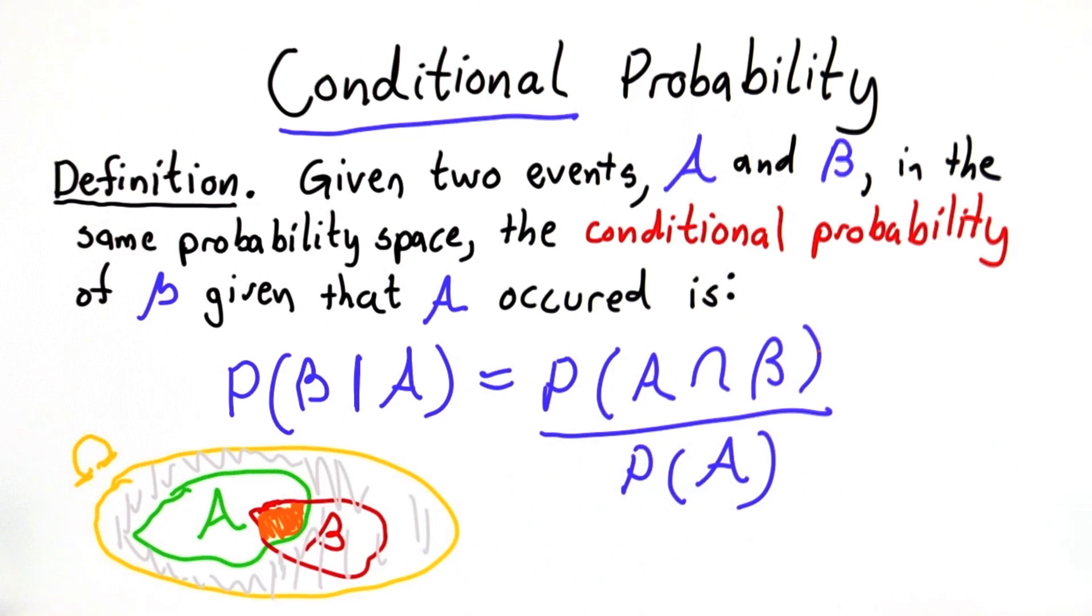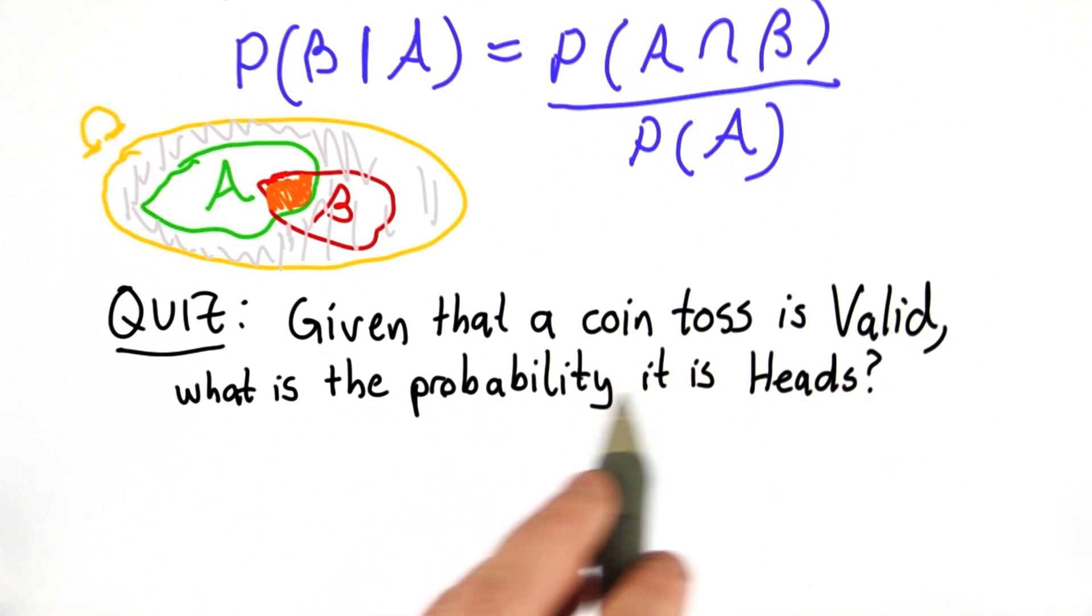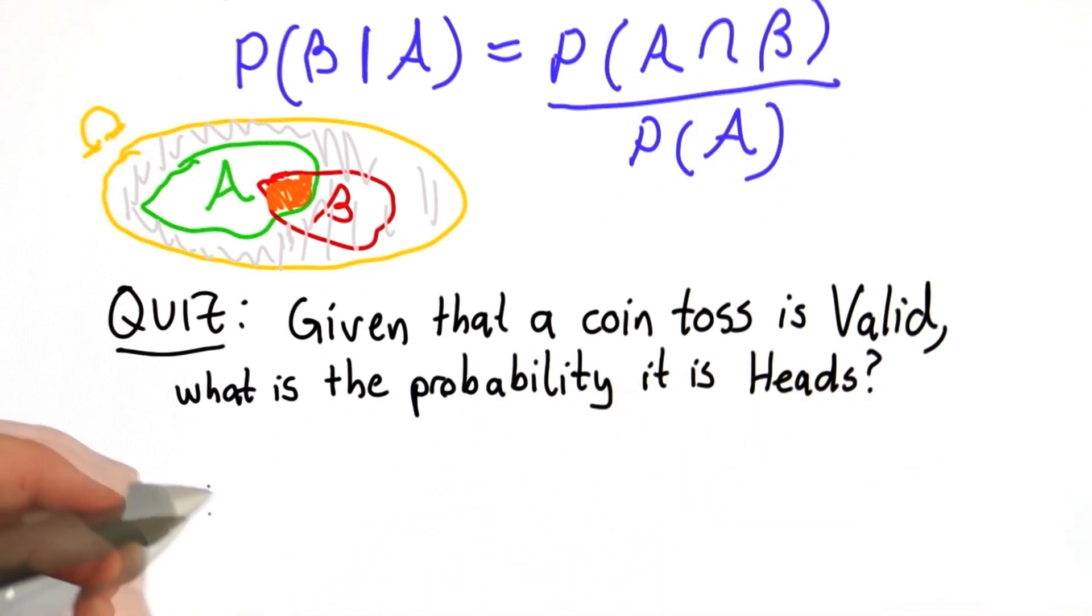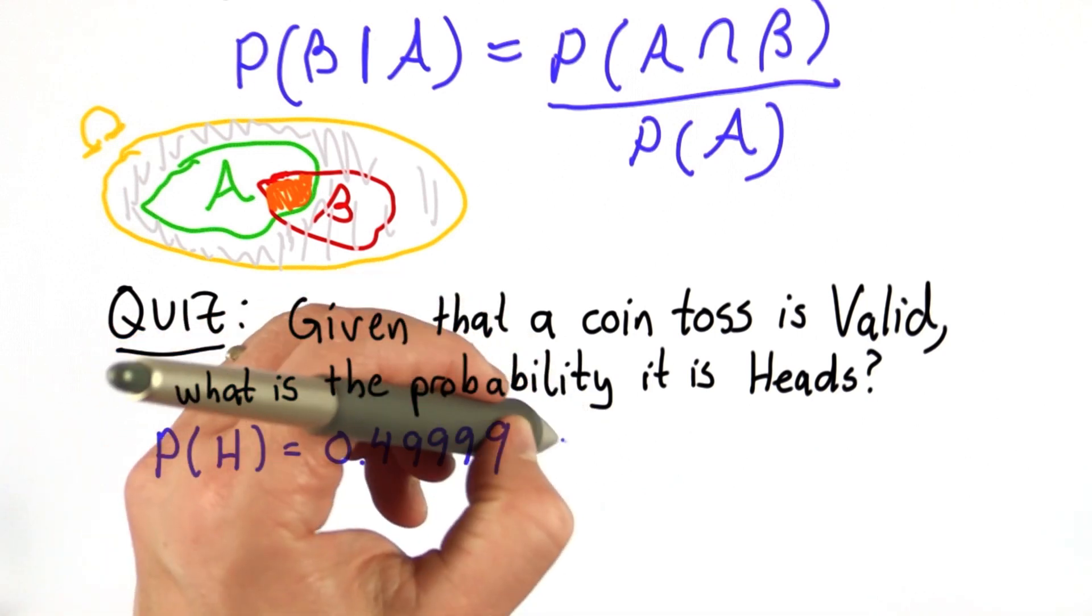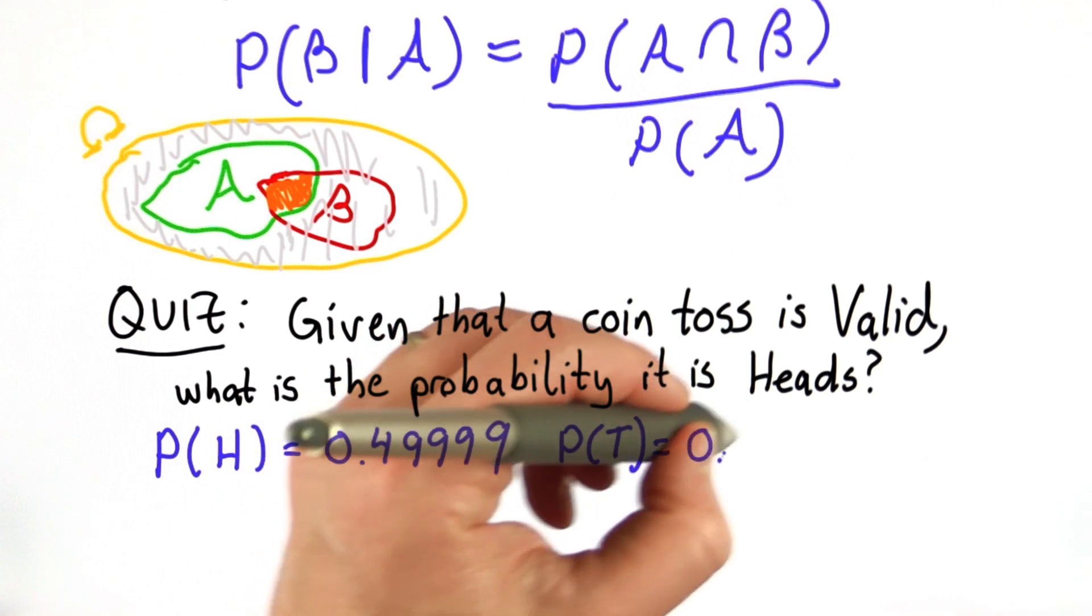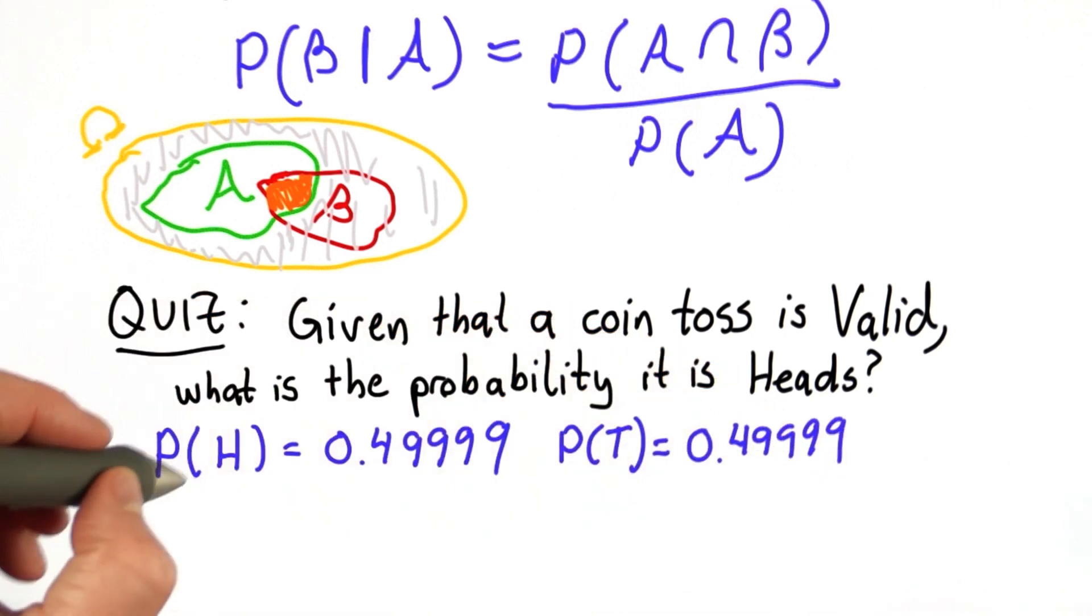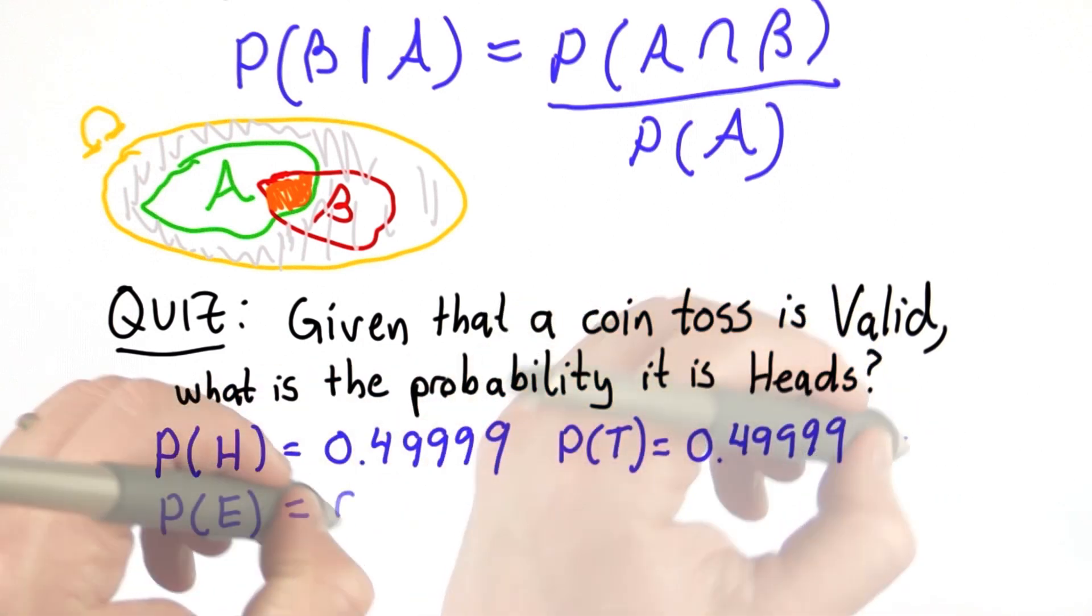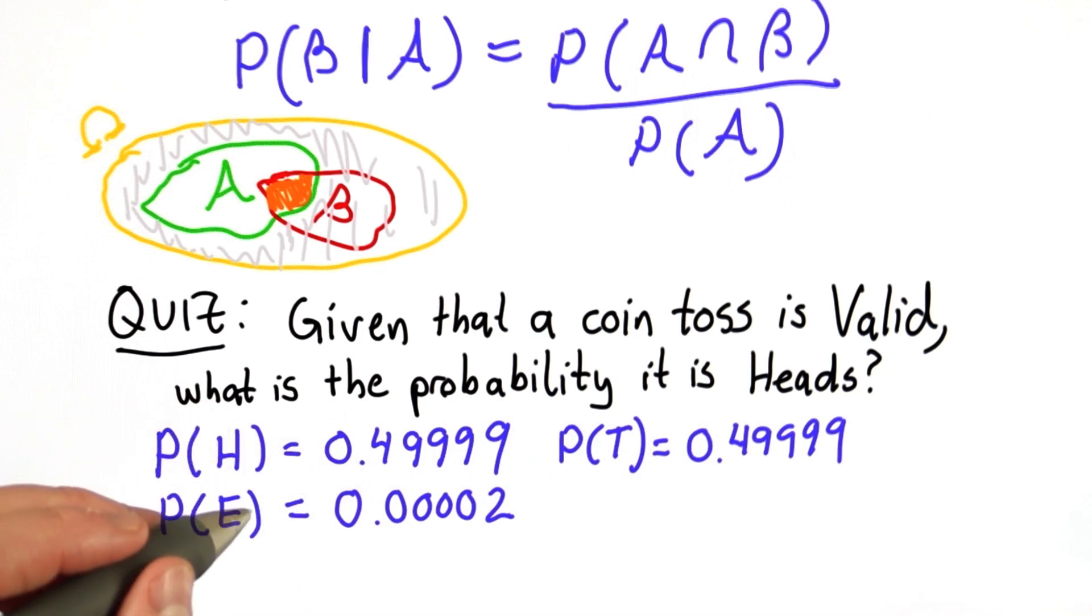Let's see if it makes sense for our example as well. The question is, given that we have a valid coin toss, what's the probability that it's heads? I'll remind you the model we had: the probability of heads is 0.49999, the probability of tails is 0.49999, and the probability of edge is 1 minus the sum of those, which is 0.00002.